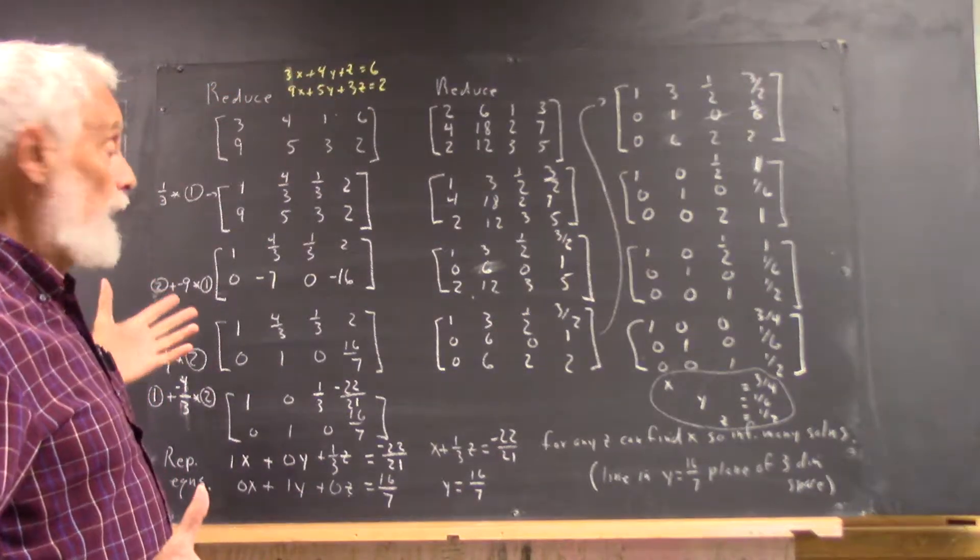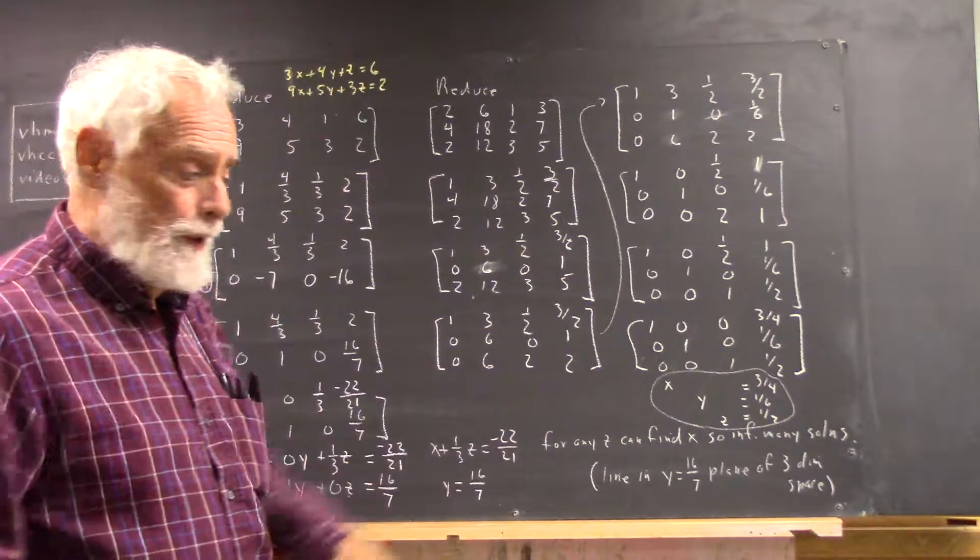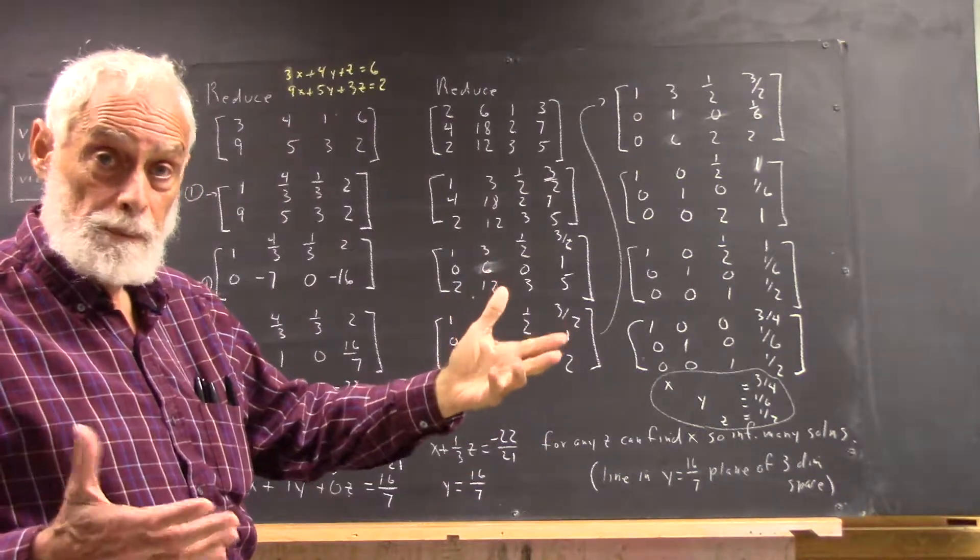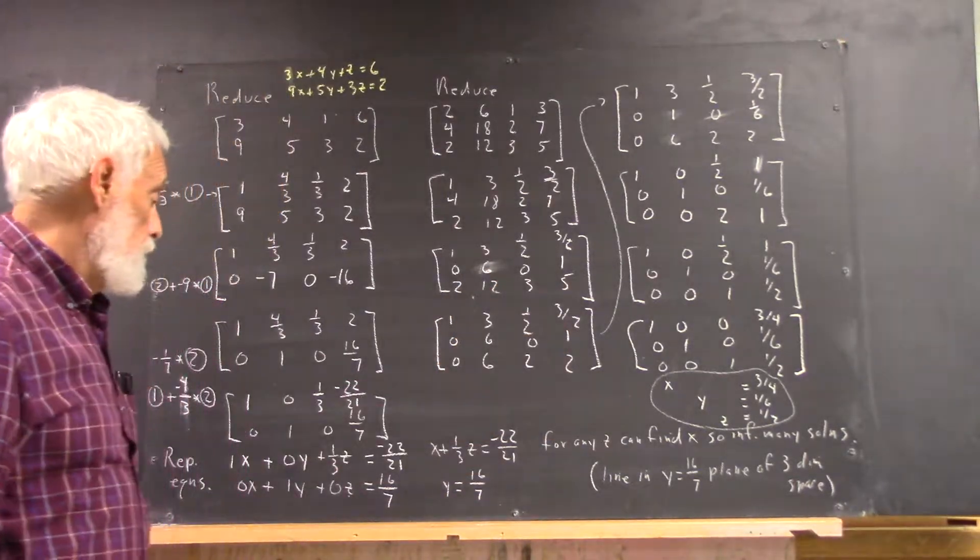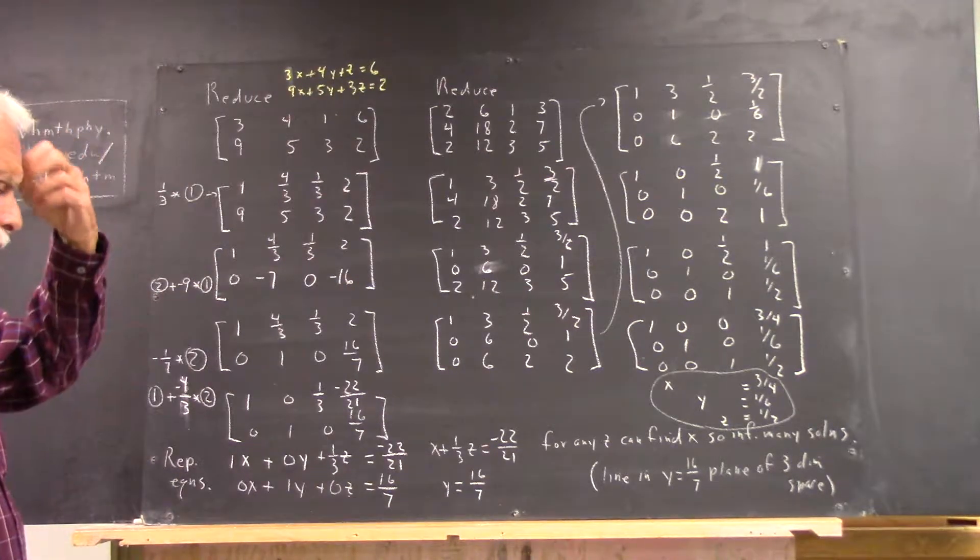Now these equations actually give us planes in three dimensions, and where two planes intersect, you have a line. Now you don't have to totally understand that or why it is or how it's true.